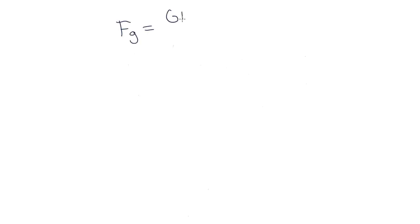We know from Newton's law of universal gravitation that the gravitational force Fg is equal to big G times big M times small m, divided by r squared — which is the universal constant of gravitation times the mass of the first object times the mass of the second object, divided by the distance between the centers of mass of the objects squared.